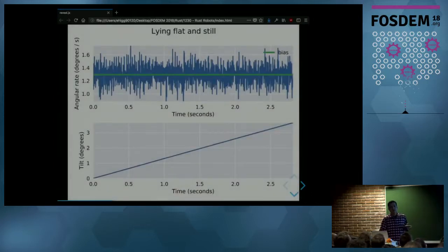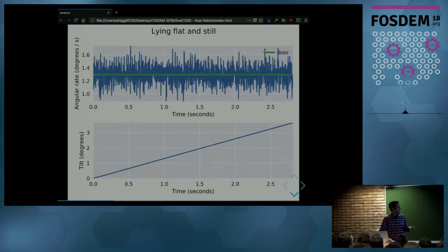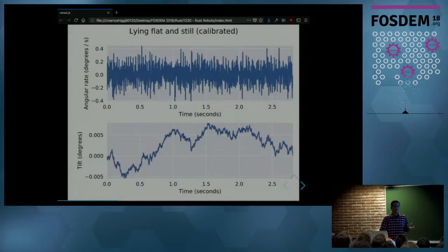This is data from the sensor when horizontal and without moving. At the top you have the angular rate, and at the bottom the tilt angle obtained by integrating that signal. The angle appears to be increasing over time, which is wrong since the sensor is horizontal. The problem is the gyroscope reports a non-zero angular rate — this is called bias. You have to calibrate the sensor by removing the bias. After calibration, the angular rate is around zero, and the integrated angle is also around zero — the correct result.